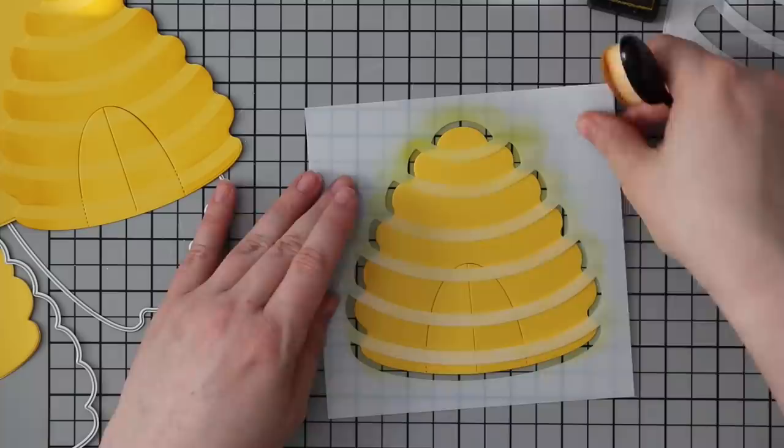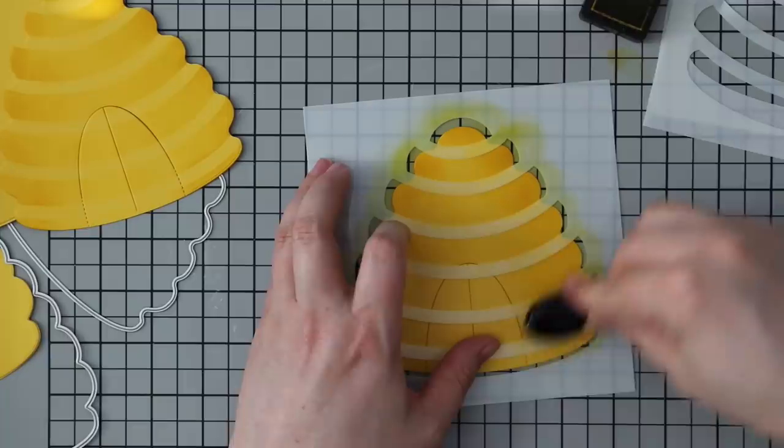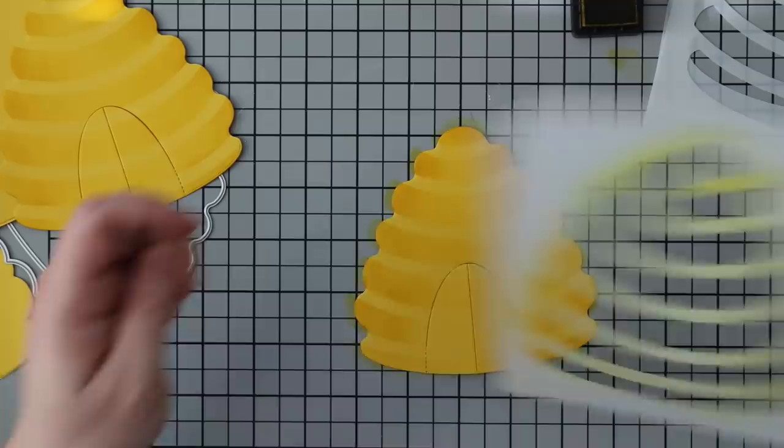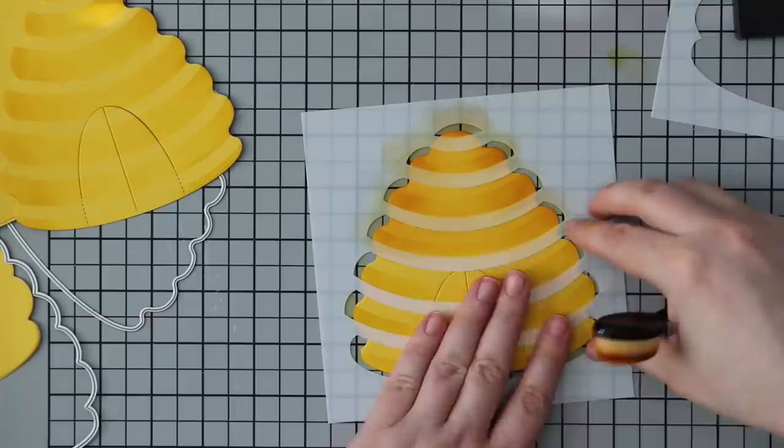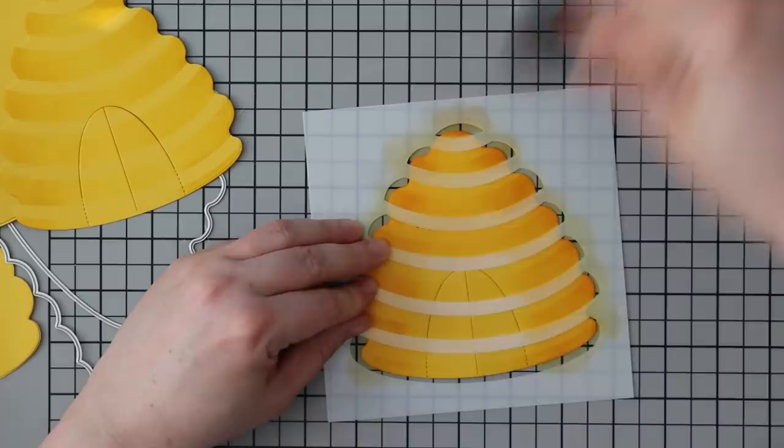I did my die cutting, and then I have the coordinating Beehive stencil set meant to coordinate with these dies. But you can also use it just as is—stencil onto a piece of cardstock, blend all the colors, do the layers, and create a beehive shape. You get two pieces of stencil, an open one, and a mask piece.